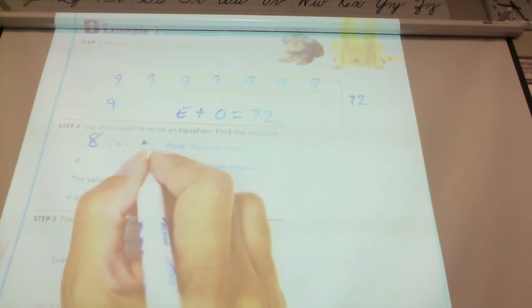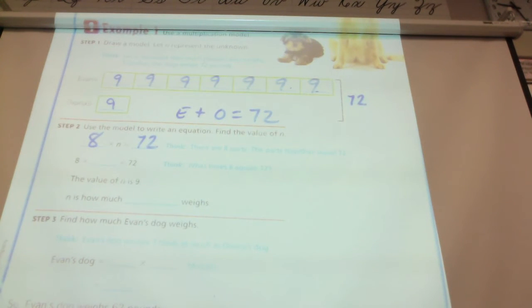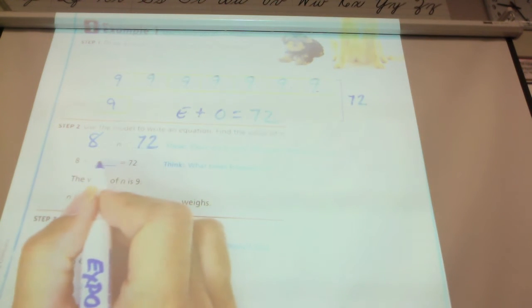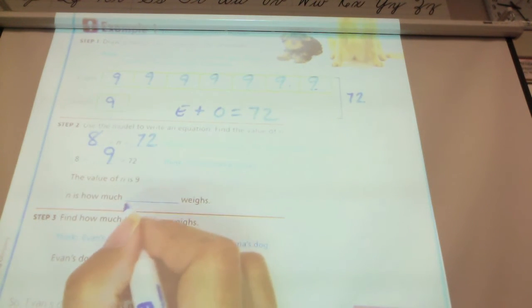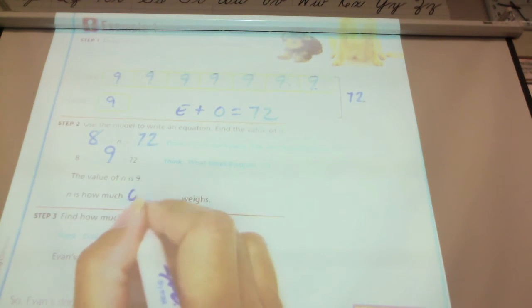And we know that they totaled 72 when we multiplied them. So, 8 times we decided what number? 8 times 9 equals 72. So, the value of N is 9. 9 is how much whose dog weighs? Oksana's dog.